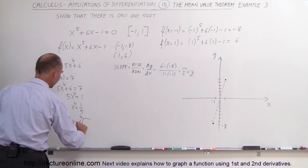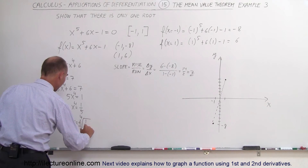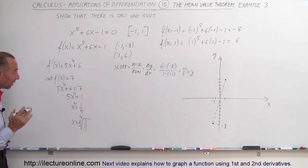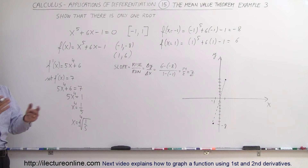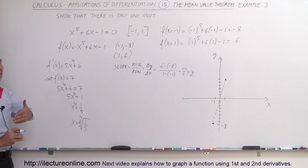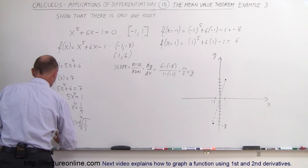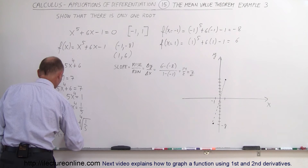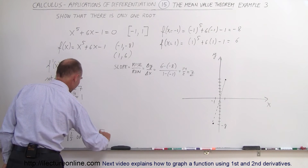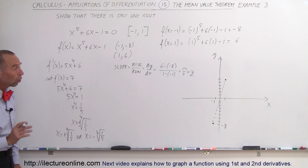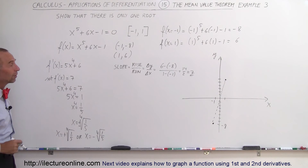Solving 5x⁴ = 1 gives x⁴ = 1/5, so x = ±⁴√(1/5) — a plus or minus because it's an even root. This tells us there are two values of x where the derivative equals the slope of the secant line: x = +⁴√(1/5) and x = -⁴√(1/5).